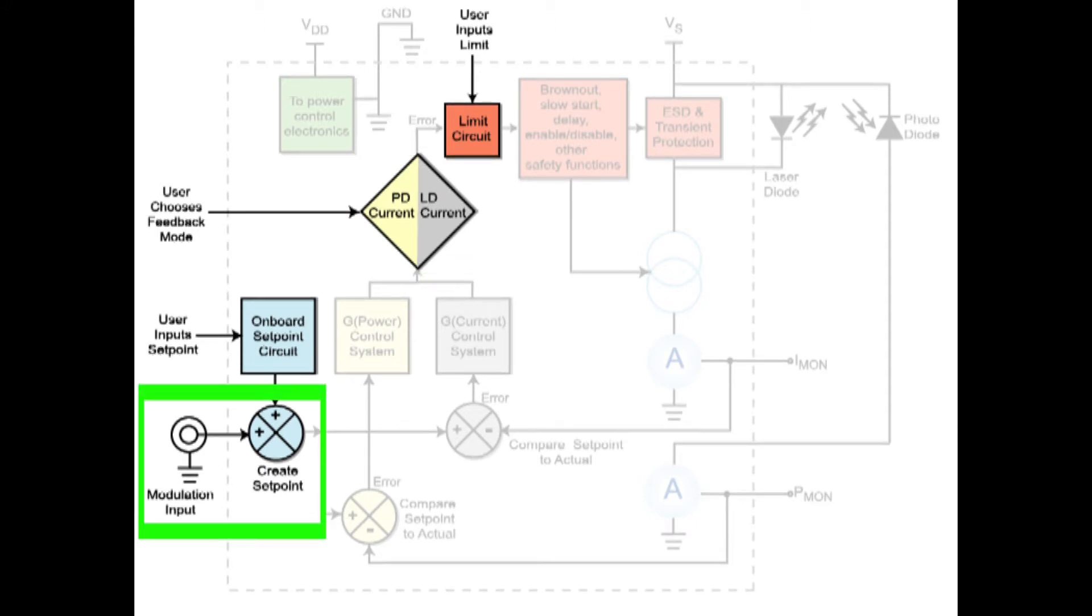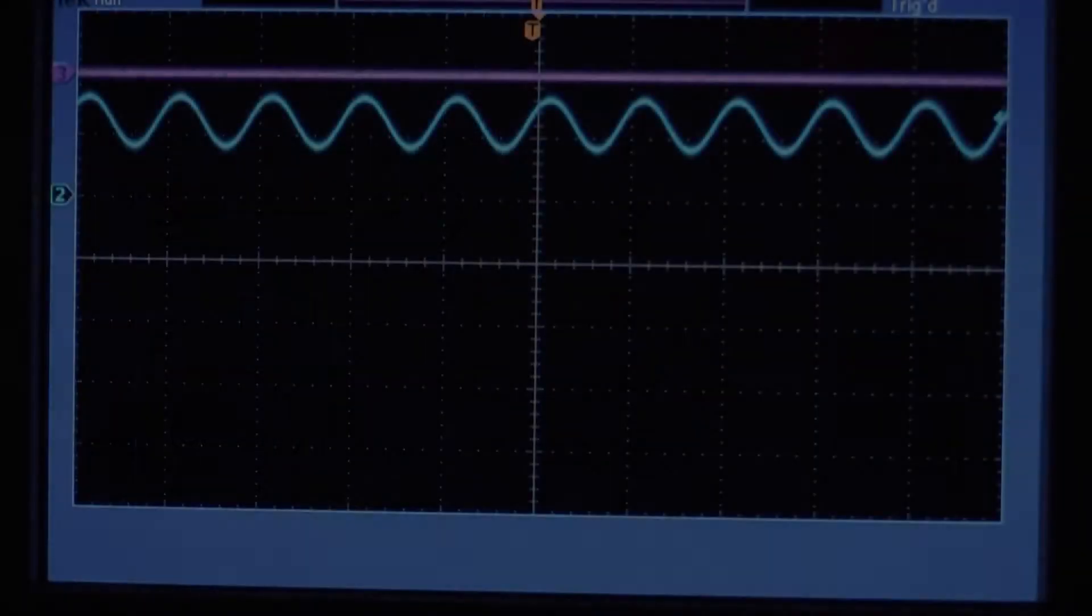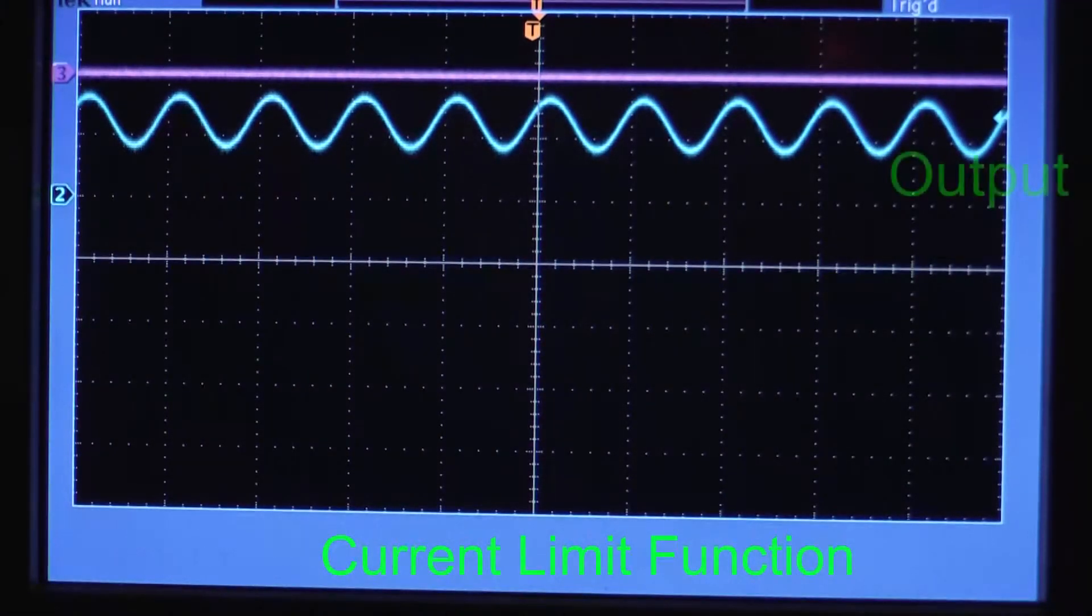Additionally, if a remote setpoint is required, an analog modulation input is usually available. One way to damage a laser diode is to drive too much current through it.